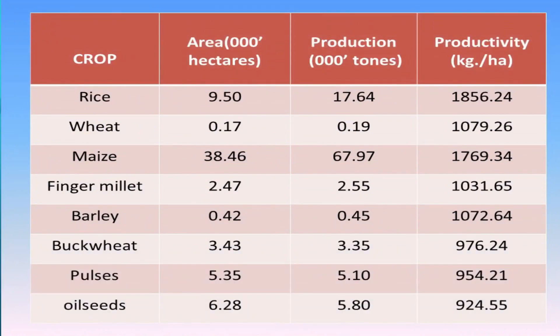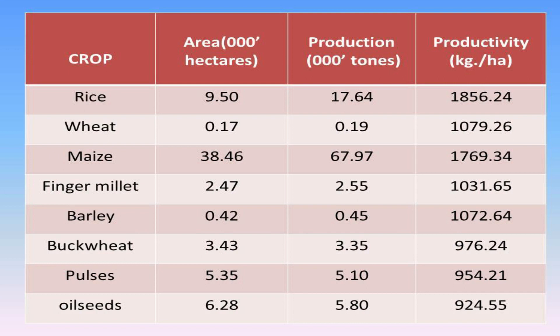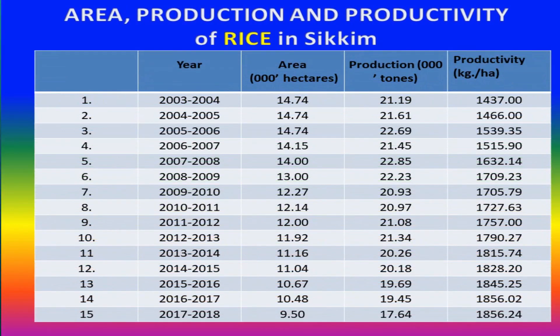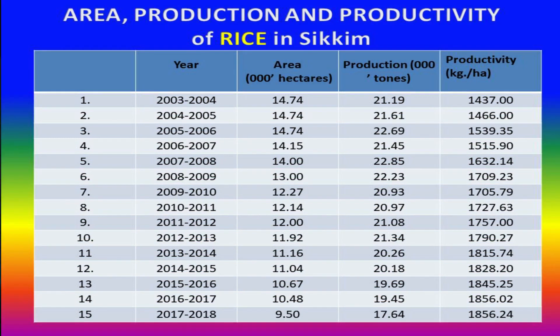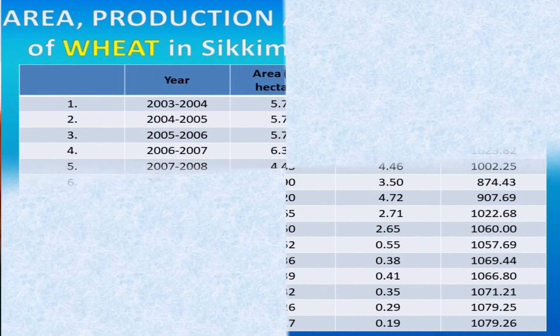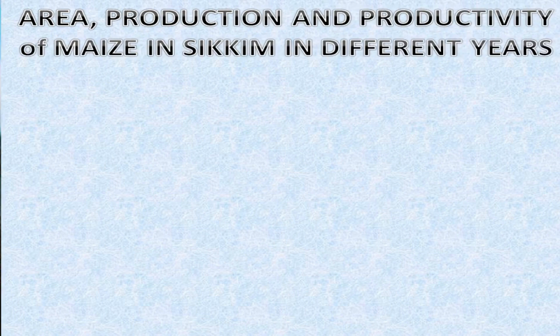Different crops are given with their area, production, and productivity. Let us examine the area, production, and productivity of rice in Sikkim, followed by the area, production, and productivity of maize in Sikkim.